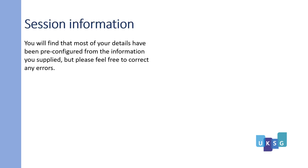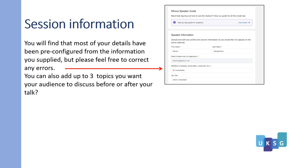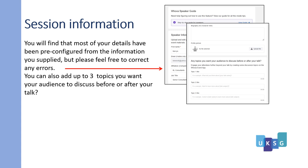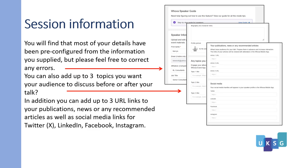You will find that most of your details have been pre-configured from the information you supplied, but please feel free to correct any errors. You can also add up to three topics you want your audience to discuss before or after your talk. In addition, you can add up to three URL links to your publications, news or any recommended articles, as well as social media links for Twitter, now known as X, LinkedIn, Facebook and Instagram.